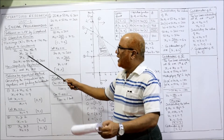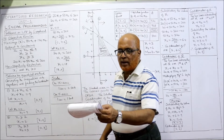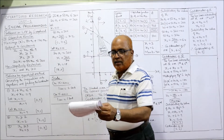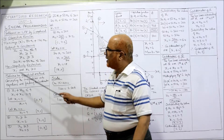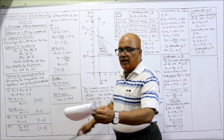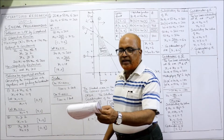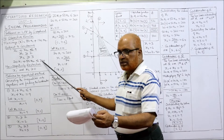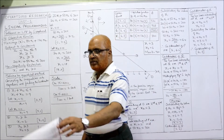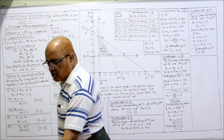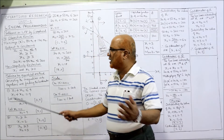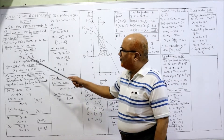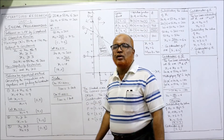The second constraint: x1 ≥ 2, then x2 ≥ 3, and the last one: 20x1 + 50x2 ≤ 360. Non-negativity restriction: x1 and x2 ≥ 0. That's it — four constraints are given, so we have to draw four lines on the graph.